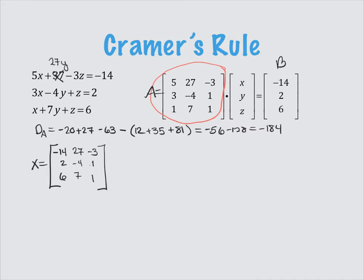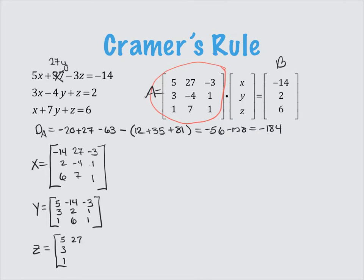With Cramer's rule, we come up with three new matrices. Matrix X is what we get when we replace column 1 with our matrix B — so instead of the original column 1 values, we have negative 14, 2, 6, and the other columns stay the same. Matrix Y replaces the second column with matrix B: we still have the first and third columns, and now the second column is negative 14, 2, 6. Finally matrix Z replaces the third column with negative 14, 2, 6. I also noticed we have 37Y in the system but it should be 27Y, so I'll correct that to keep everything consistent.